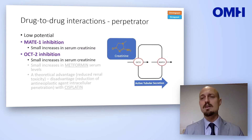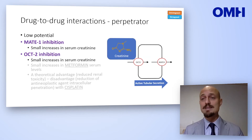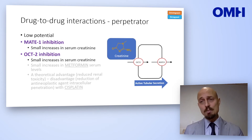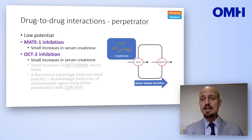If we discuss dolutegravir and bictegravir — we don't discuss raltegravir because at this time we don't know any drug-drug interaction for which raltegravir is a perpetrator of the DDI. These two compounds, dolutegravir and bictegravir, are MATE1 inhibitors and OCT2 inhibitors.